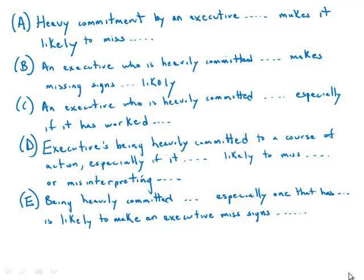This is a hard one because the whole sentence is underlined and it's a very tricky set of ideas that we need to express, expressed very differently throughout the answer choices. The first one — 'heavy commitment by an executive' — is a passive structure right away, which makes us suspicious. Then we get 'makes it likely to miss incipient signs,' and the question is: to what does this 'it' refer? It appears to be an empty 'it' with no meaningful antecedent, and these are almost always wrong on the GMAT.